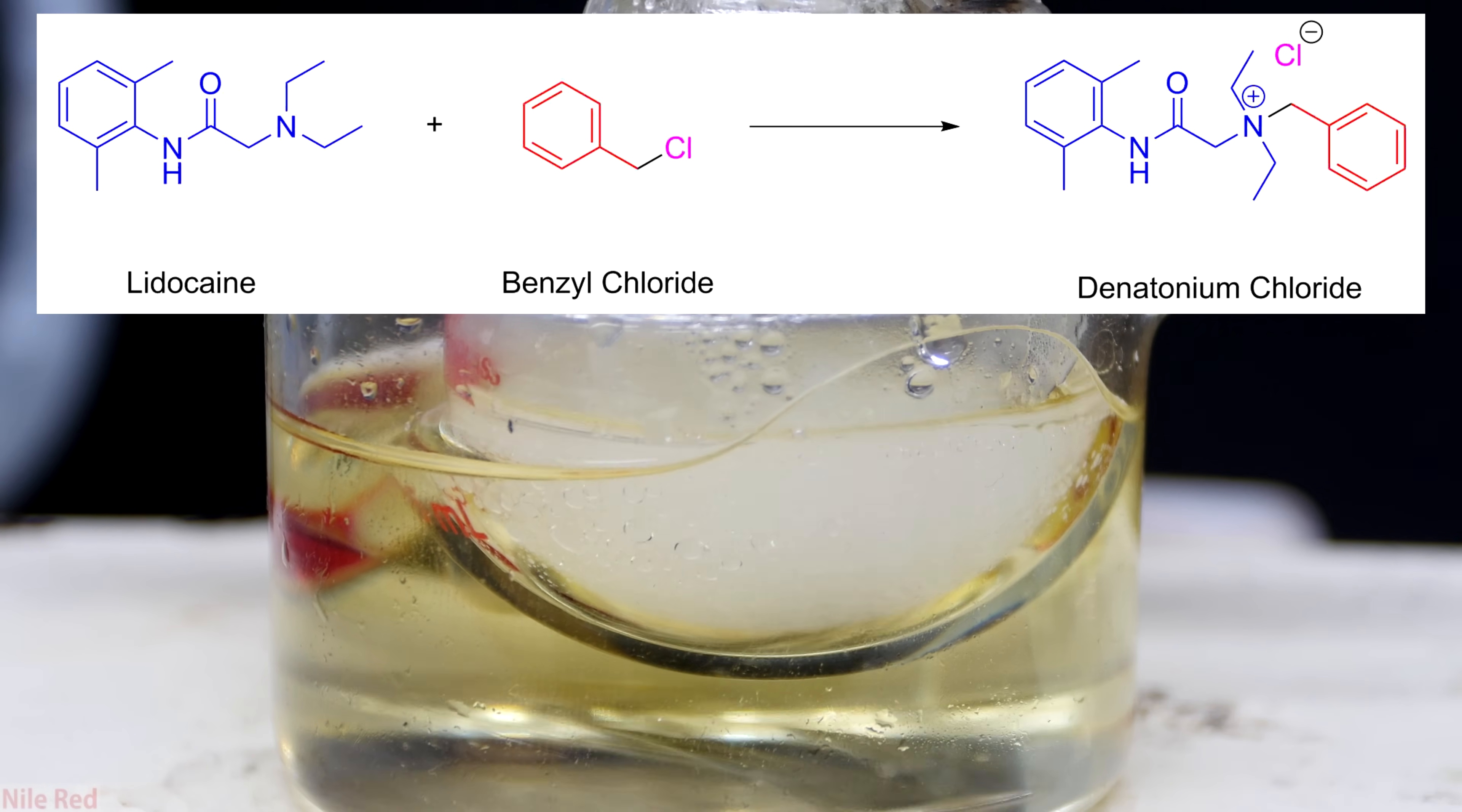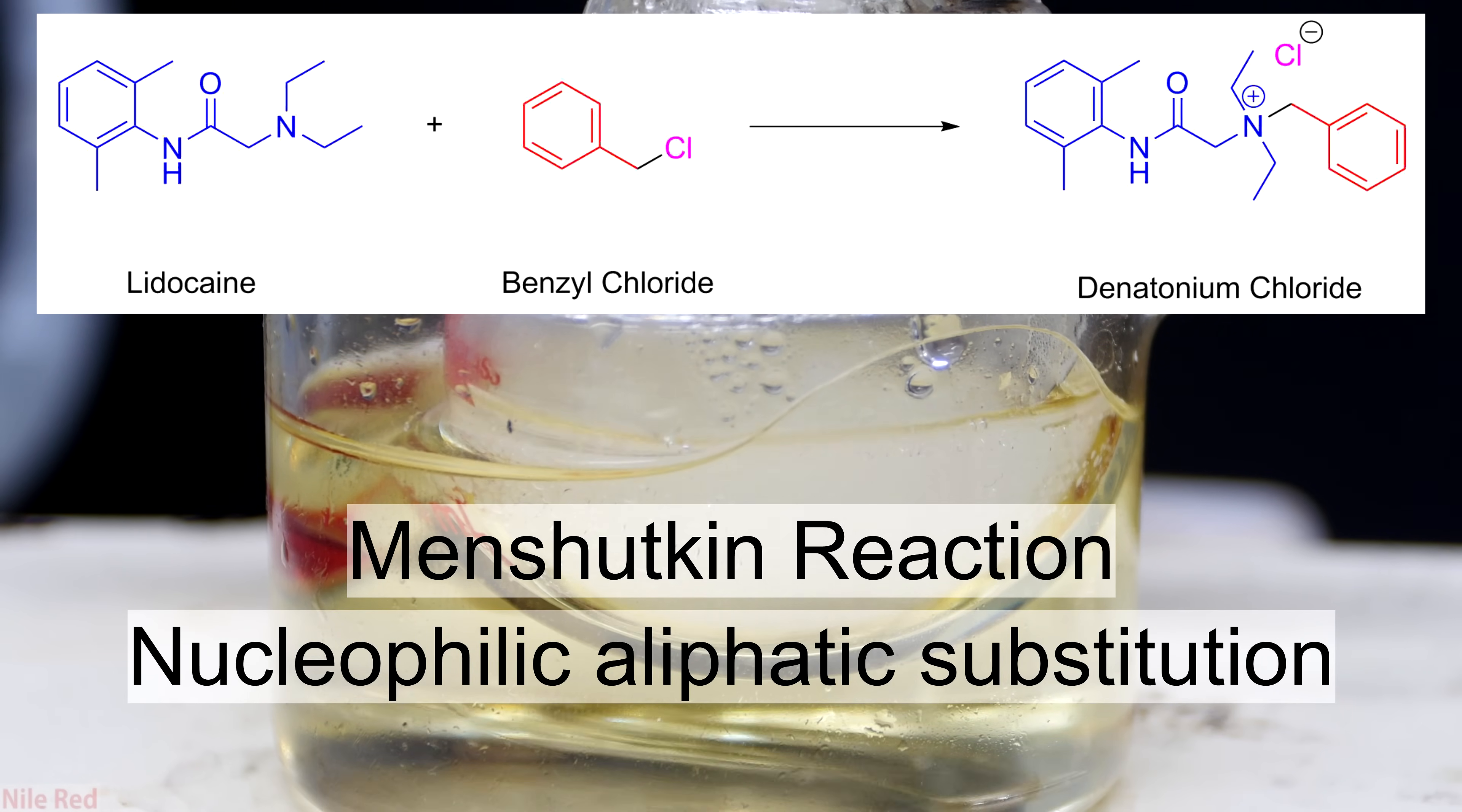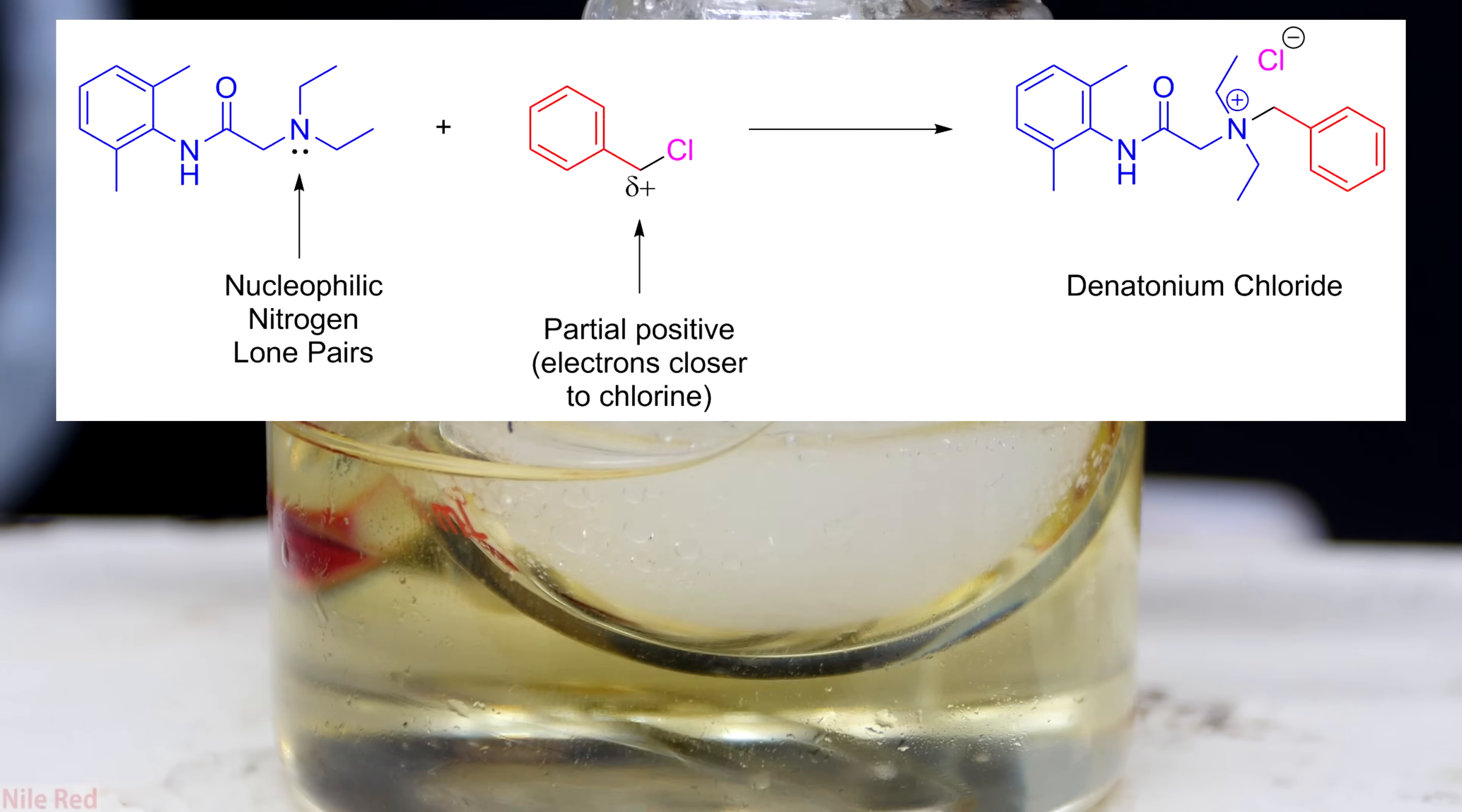The general name for this type of reaction, where a tertiary amine is reacted with a halogenated alkane to produce a quaternary ammonium salt, is called the Menshutkin reaction. The type of reaction that this is is a nucleophilic aliphatic substitution. Chlorine is a lot more electronegative than carbon, which means it has a stronger pull on the electrons that they share. Because of this, the electrons aren't shared super evenly and they actually lie closer to chlorine. Because of the decreased influence of the negative charge of the electrons, the carbon takes on a very slight positive charge.